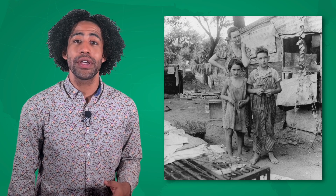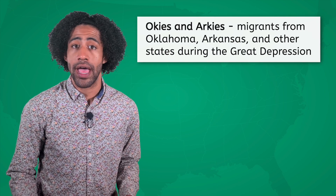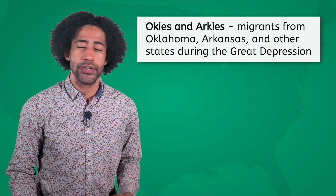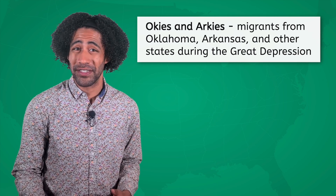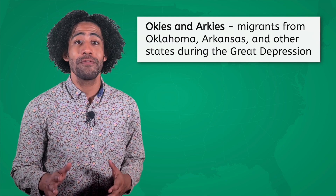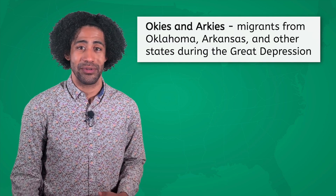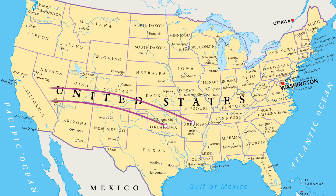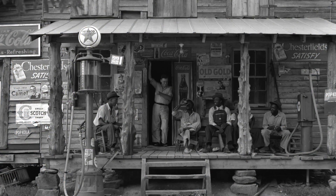For our last stop, we'll look at the westward journey of two groups collectively known as the Okies and Arkies — migrants from Oklahoma, Arkansas, and other states. The terms Okie and Arkie were first used in an offensive way to belittle the migrants traveling the country in search of work; however, the group eventually embraced the terms and made them their own. This group fled the southwestern United States during the 1930s due to a combination of push and pull factors. Their struggles and determination were famously documented by photographer Dorothea Lange, who captured their journey in a series of images.